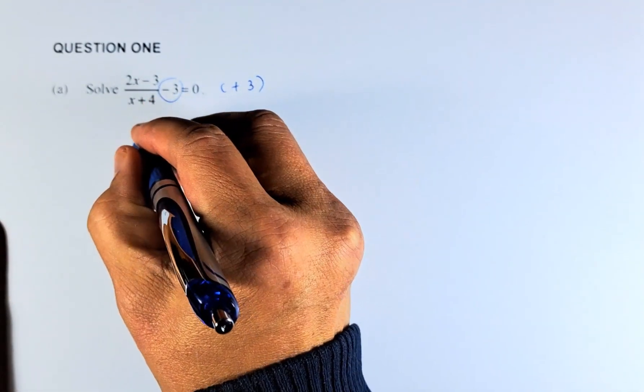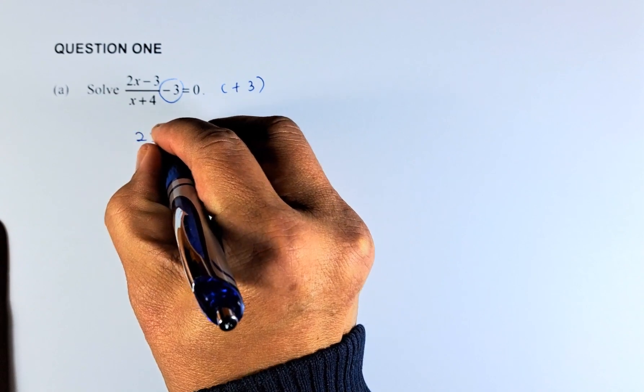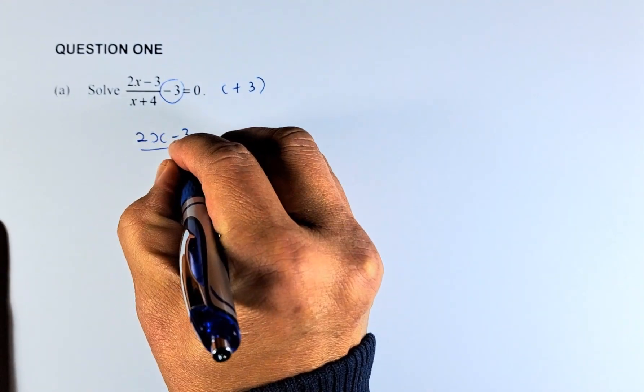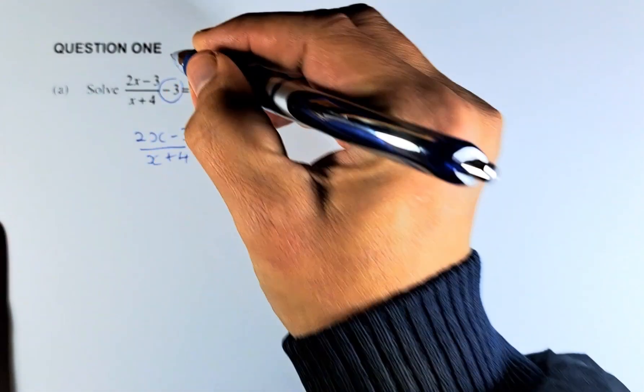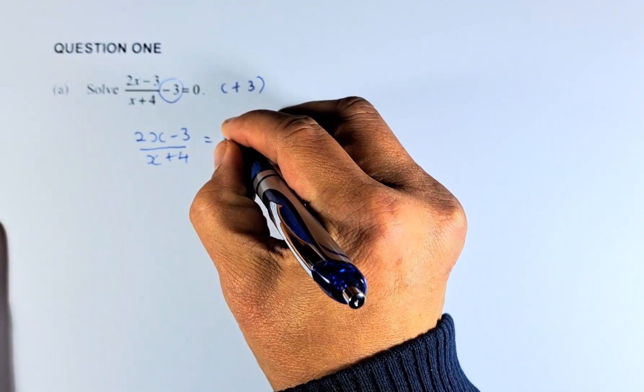the equation on the left is going to look like this: (2x - 3)/(x + 4) - 3 + 3 = 0. So this will be eliminated and that is equal to 3.